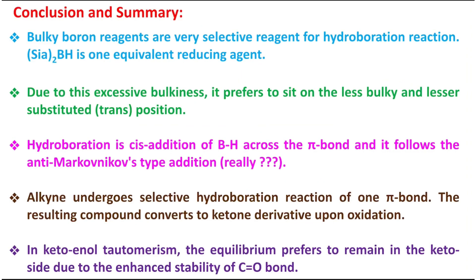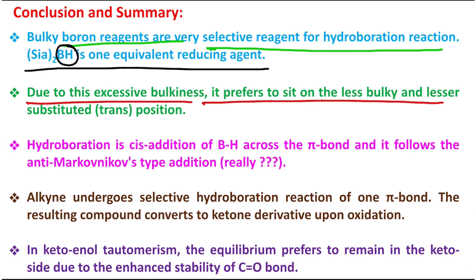Now in conclusion, what you have learned today is that this bulky boron reagents are very selective reagent for hydroboration reaction, and (Sia)2BH is actually one equivalent reducing agent because there is only one BH bond. Due to this excessive bulkiness, it prefers to sit on the less bulky and less substituted trans position.